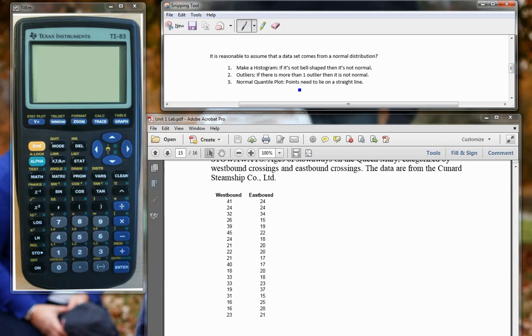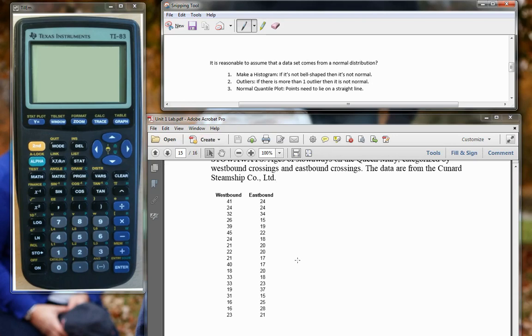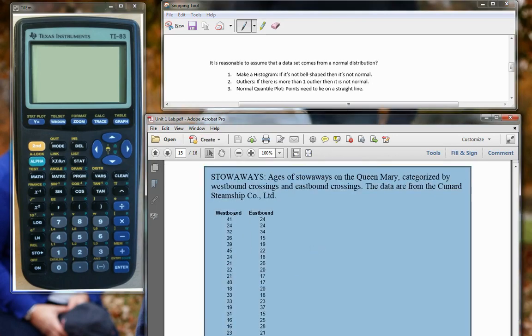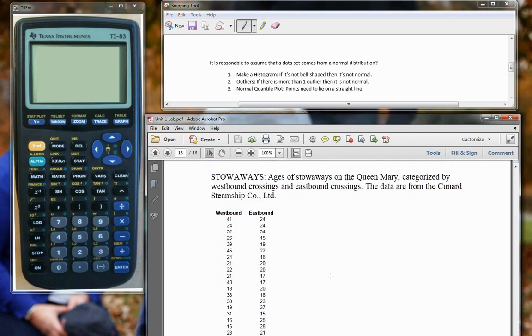Okay, so we're gonna do two examples here with some data set that you've already seen from unit one. Okay, so you'll see I actually have unit one lab pulled up here. And so this first one we're gonna look at the westbound, the ages of the people who were on the Queen Mary on westbound crossings. Okay, so I've already put that into our L1. Okay, I already entered those just so it wouldn't waste your time.